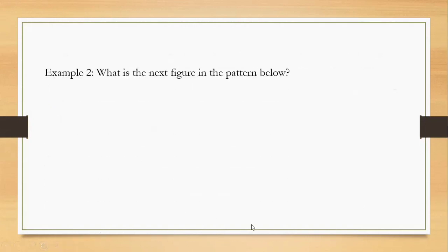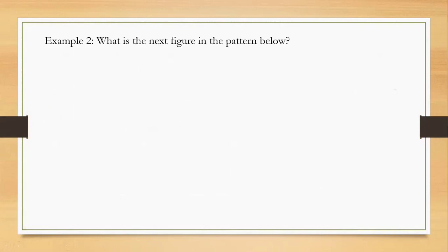We have another example, number two. What is the next figure in the pattern below? Try to observe the pattern below. There's a horizontal line in the upper of the box. The second, there are already two lines. Left-hand side is a box.